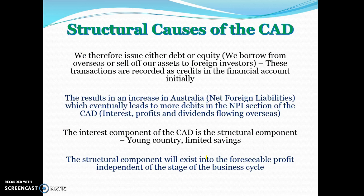We issue debt or equity to foreign investors, which are recorded as credits in the financial account initially. But because we have so much debt — being a young country that relies on overseas borrowing — we have a high level of net foreign liabilities. We owe countries a lot of money in terms of debt, and they also hold a lot of equity investment in Australia. The problem is that this leads to more debits in the net primary income section of the current account, with a lot of interest, profits, and dividends flowing overseas.